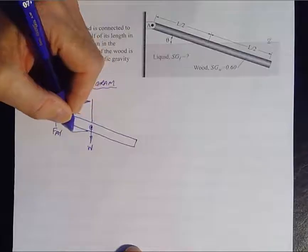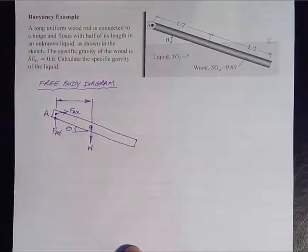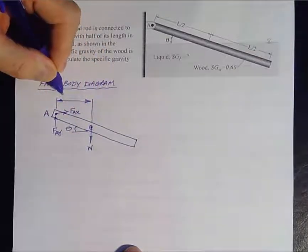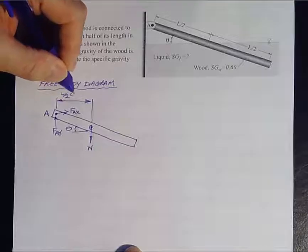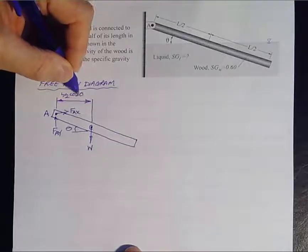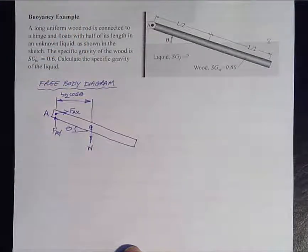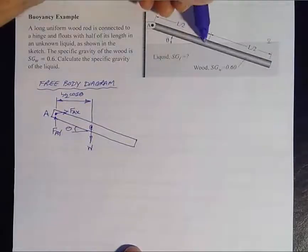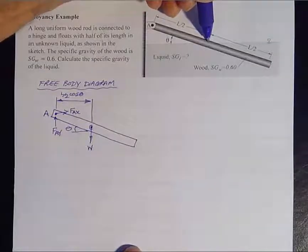If the rod is inclined at an angle theta, then this distance here is clearly L upon 2 cos theta.